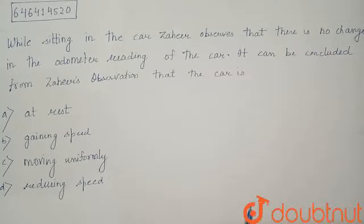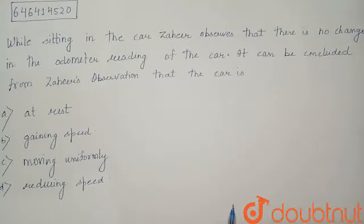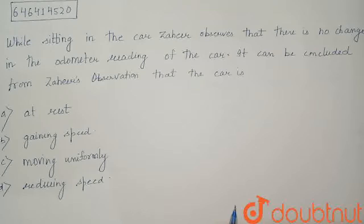While sitting in the car, Jahir observes that there is no change in the odometer reading of the car. It can be concluded from Jahir's observation that the car is: option A at rest, option B gaining speed, option C moving uniformly, option D reducing speed.